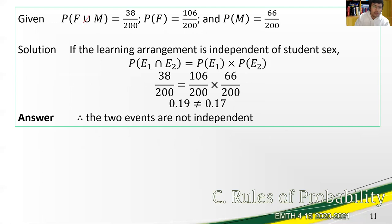We have here the different probabilities of female students preferring the module learning, the probability of the females and the probability of module learners. Using the second formula, test for independence, we have the left side equals 0.19 from 38 over 200, and the right, we have 106 over 200 multiplied by 66 over 200. That gives us different left and right values of 0.19 and 0.17 which indicate that the sex is not independent of the learning arrangement. In other words, the sex of a person will affect his or her choice of learning arrangement. So, that is the general conclusion from this test of independence.